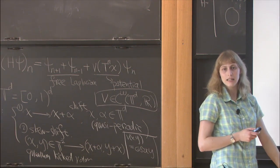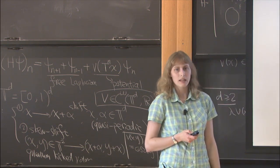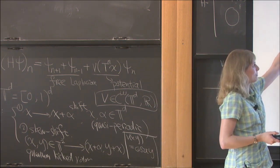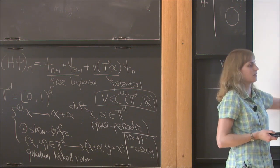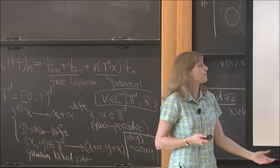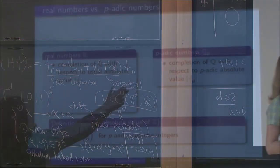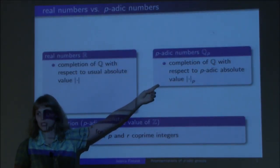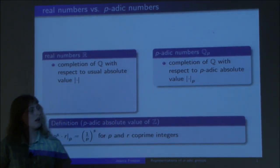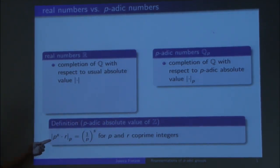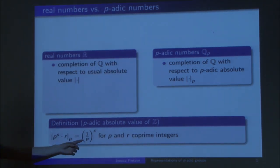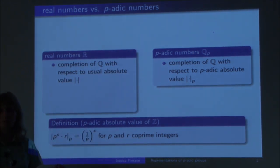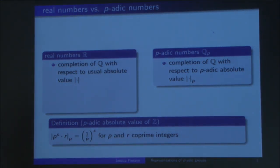Everyone is familiar with the real numbers, which are just the completion of the rational numbers with respect to the usual absolute value. The p-adic numbers are also a completion of Q, but with respect to the p-adic absolute value. The p-adic absolute value for integers is defined as: the p-adic absolute value of P^s times R, where P and R are co-prime, is 1 divided by P^s. In other words, the more often the number is divisible by P, the smaller the p-adic absolute value is. So two numbers are close if their difference is often divisible by P.